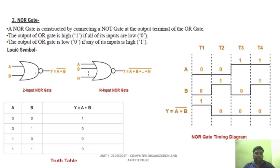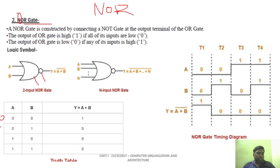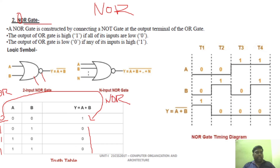Looking at the truth tables combined: the NOR gate is a combination of OR gate followed by a NOT gate. That is why it is called NOR — N-O-R. This is the NOR gate complement output. NAND gate and NOR gate are called universal gates because they can be realized for any binary operations, including all basic gates.